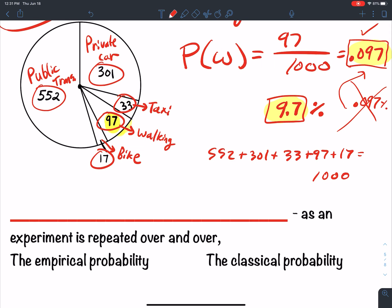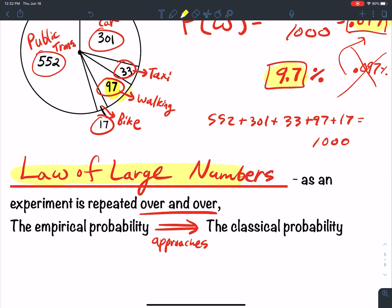The law of large numbers. As an experiment is repeated over and over, the empirical probability approaches the classical probability.